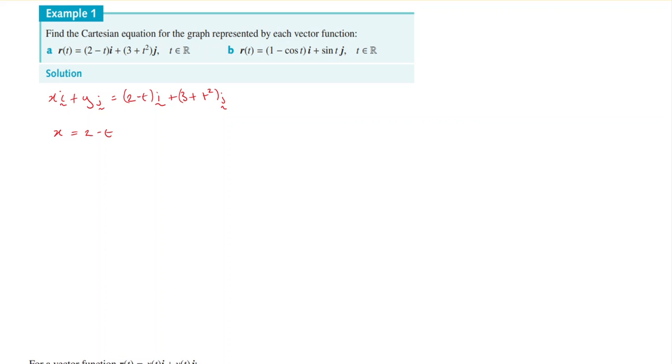So x will be equal to 2 minus t. If we transpose that to get t by itself, t will be equal to 2 minus x. Still equating the coefficients. Do it for the y now. So y will be equal to 3 plus t squared.